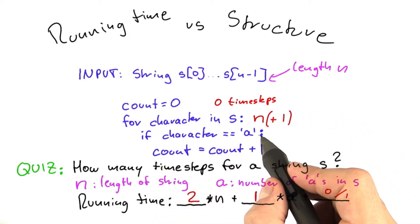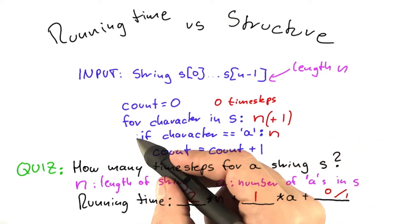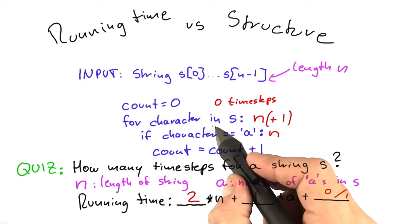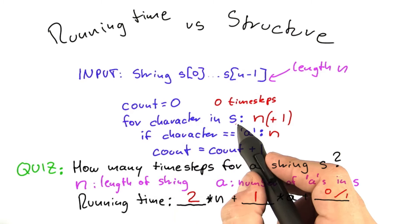The next step, though, is always executed n times because the number of times this inner loop here is executed does not depend on the number of time steps it takes for this line here to end.